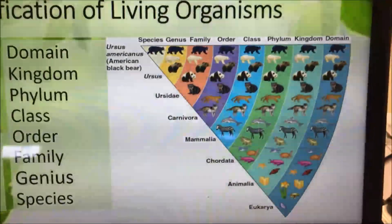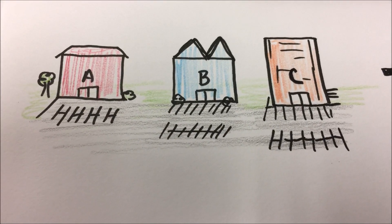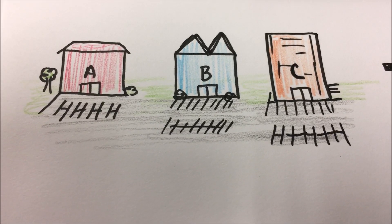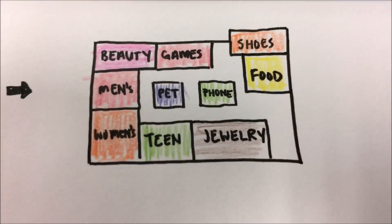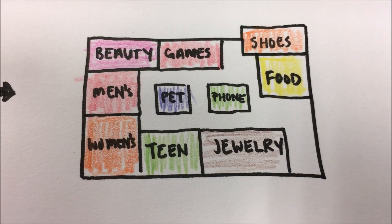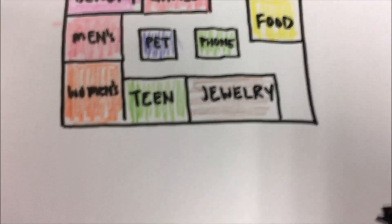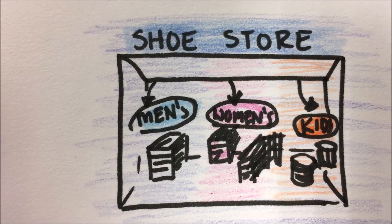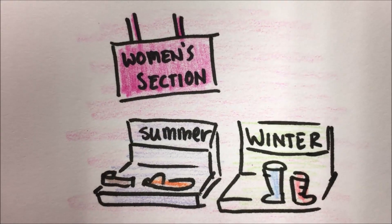Another way to look at that is: picture you were going to the mall trying to find an object. Kind of like domain — we have three domains, so picture we have three malls: Mall A, Mall B, Mall C. That object you're looking for might be in a specific mall. Say we zoom in on Mall C and take a look at its map — we see it has beauty stores, game stores, shoes, food, phone, teen, jewelry, women's, men's. Say we're looking for a specific shoe. We go to the shoe department, and even the store is branched up: men's, women's, kids. We're trying to find women's shoes, so we go to the women's department. We recognize that even that is split up into summer and winter shoes.